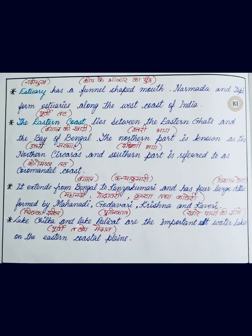Now we will study the eastern coast — Poorvi Tat. The eastern coast lies between the Eastern Ghats and the Bay of Bengal. Just as the western coast was between the Western Ghats and the Arabian Sea, similarly the eastern coast — Poorvi Tat — lies between the Eastern Ghats — Poorvi Ghat — and the Bay of Bengal — Bangal ki Khadi. This is also divided: the northern part is known as Northern Sirkars, and the southern part is referred to as the Coromandel Coast — Coromandel Tat.